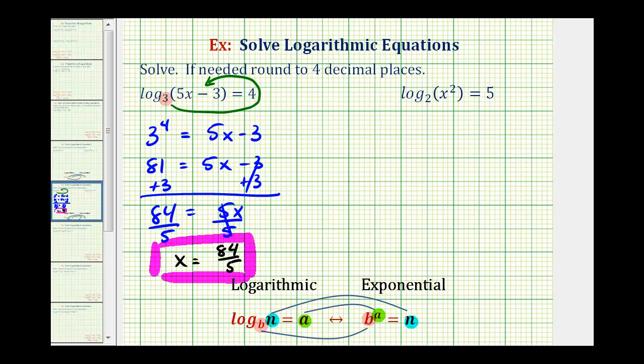Let's take a look at our second equation. Notice in this log equation, two is the base. So the exponential equation would be two raised to the fifth power must equal x squared. So two is the base, five is the exponent, and it must equal x squared.